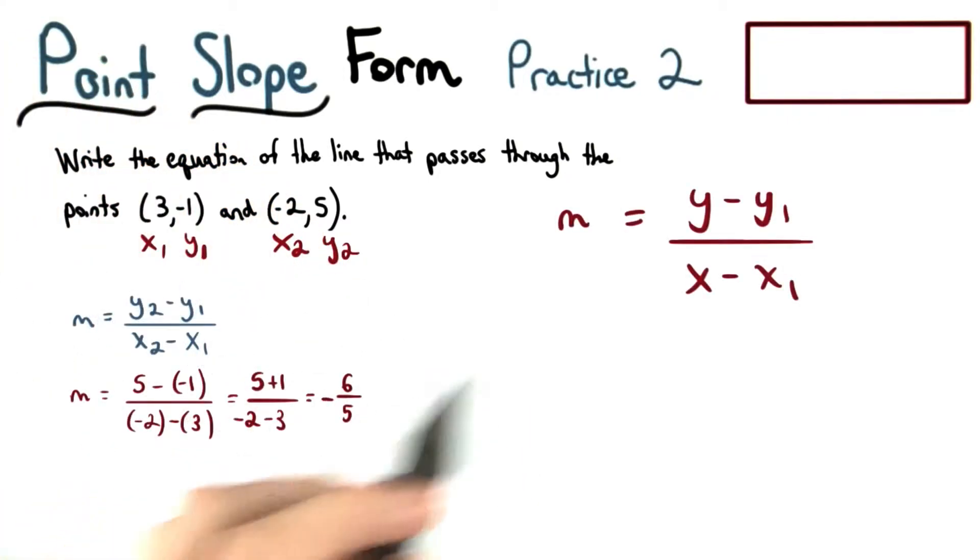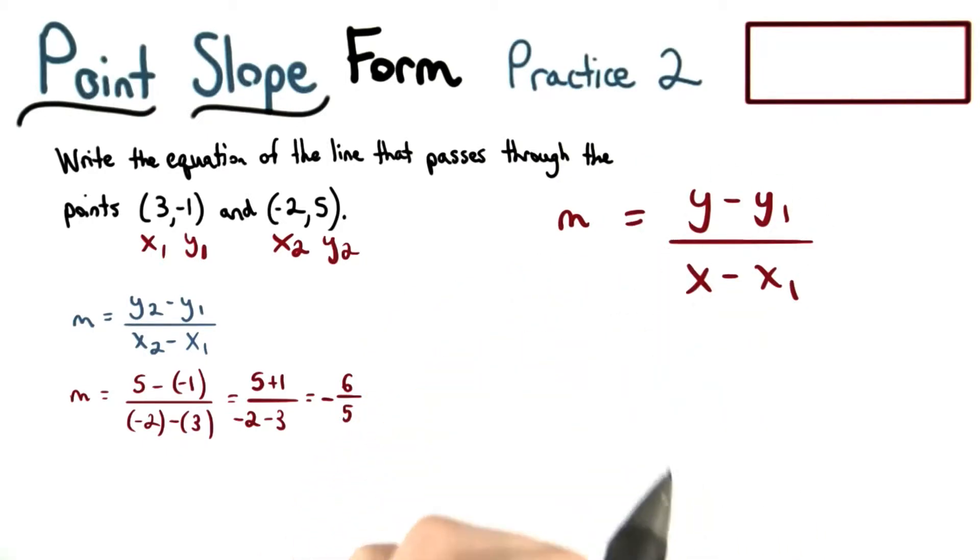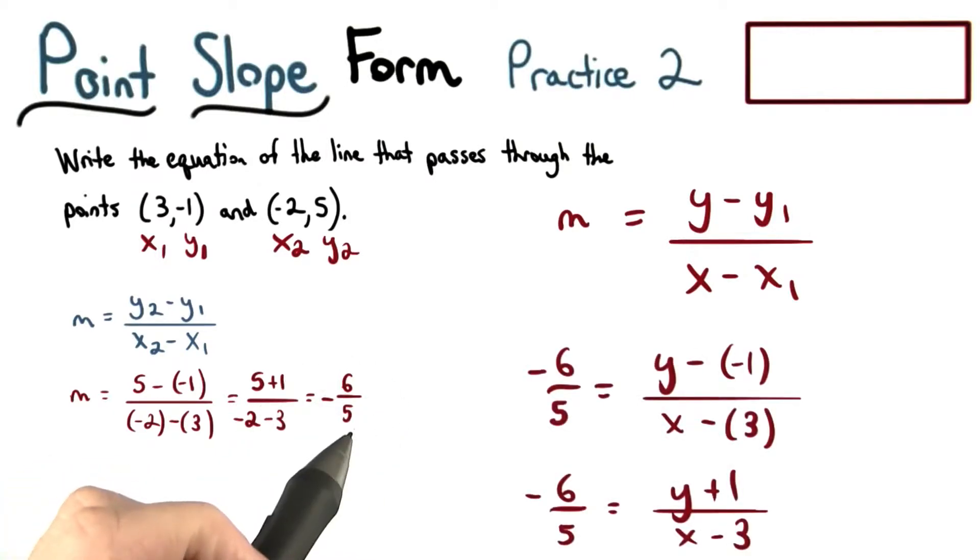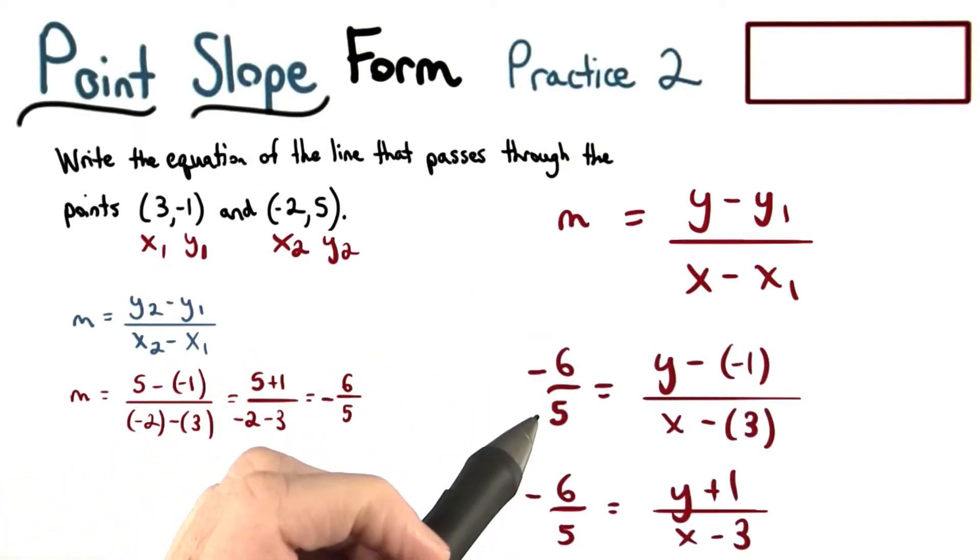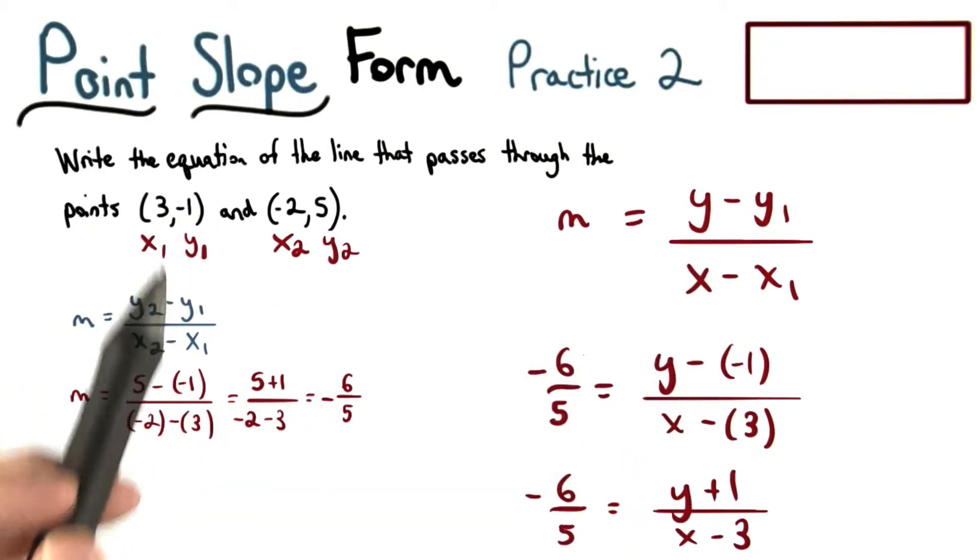Now that we have the slope, we can use our slope formula again and fix one of the points to be x and y. These two variables will appear in our equation. We can plug in negative 6 fifths in for the slope. And then we can use our other point, 3 and negative 1, for x1 and y1. That's this point here.